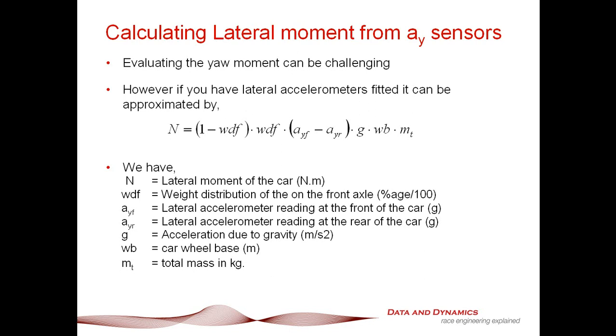First things first, I want to discuss with you the corrected form of the lateral moment equation. We can still calculate forces from our lateral accelerometers. That's still completely valid. The mistake I made was that the lateral moment actually should be this form here, which is our yaw moment equals 1 minus the weight distribution times the weight distribution at the front times AYF minus AYR times G times wheelbase times the mass total, where all the terms are the same that we discussed last time.